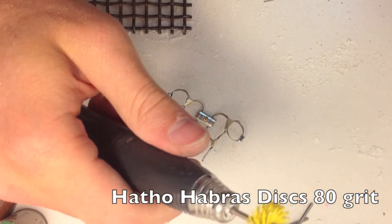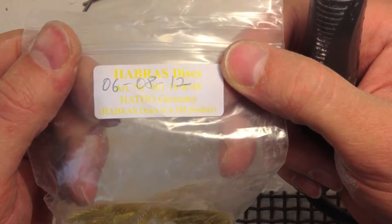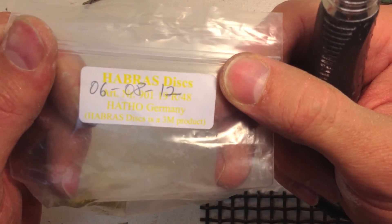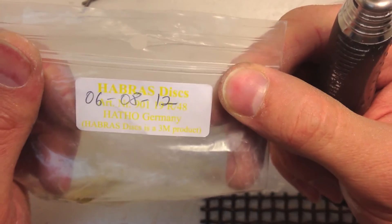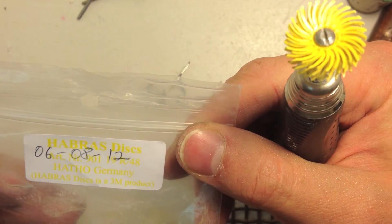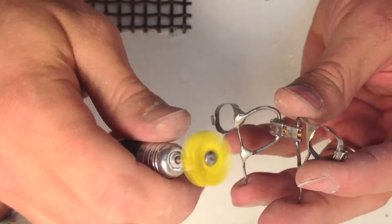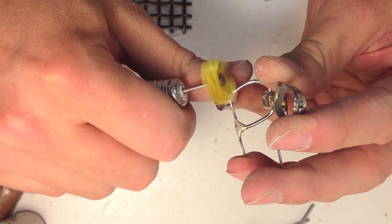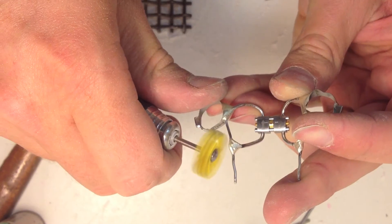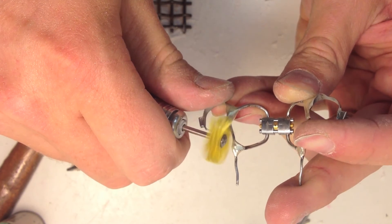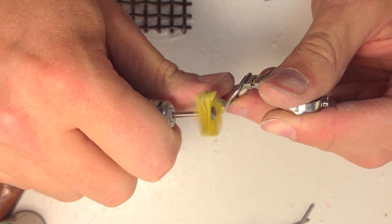The Hatho bristle brushes. I can barely say it. Habrus Disc, that's what it's called, from Hatho Company. This is 80 grit. It's like a pumice. Can you see how the bristles really smooth out the area?